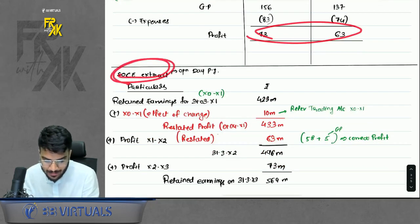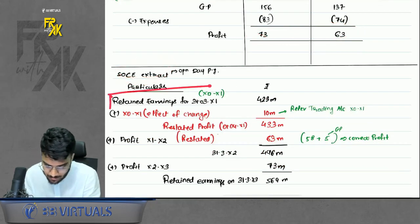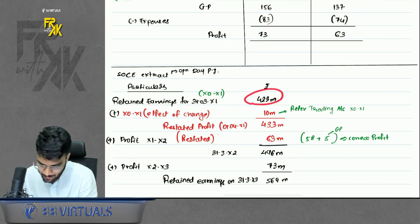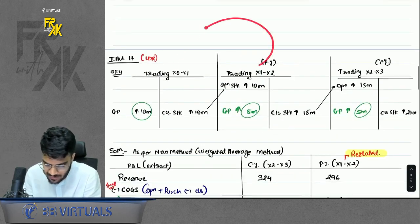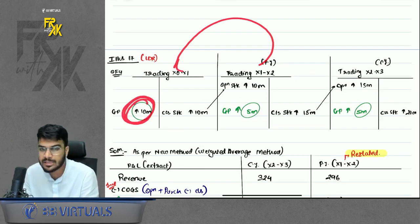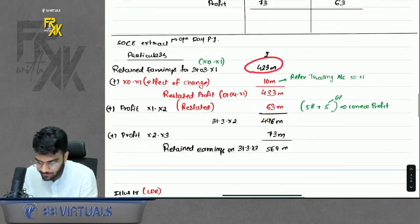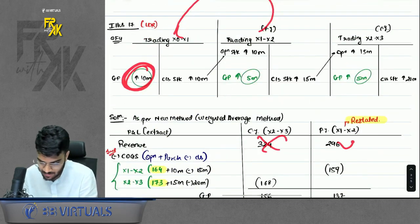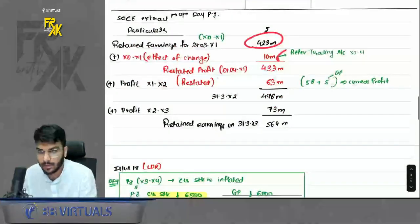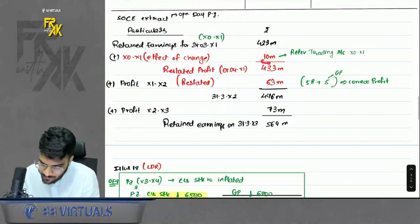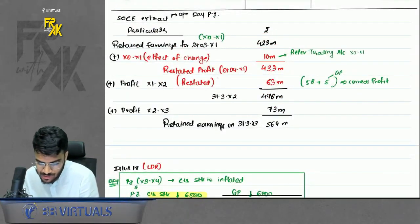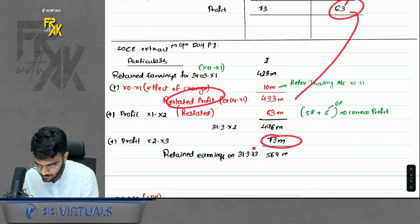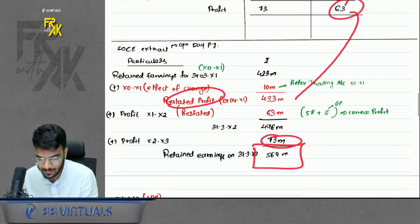When preparing the SOCE extract, the retained earnings opening balance on day one of previous year is given. The before-previous-year impact of 10M increase in GP did not come in profit and loss but must be given directly in retained earnings. First give that impact to get restated retained earnings, then add previous year profit and current year profit to arrive at the closing retained earnings balance.